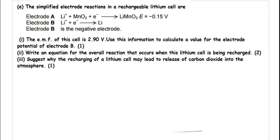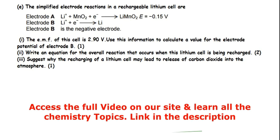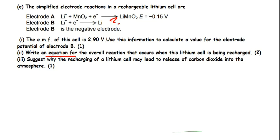Let's look at question 1E. We are told the simplified electrode reactions in a rechargeable lithium cell are given. We've got electrode A and electrode B. We are told B is the negative electrode. The EMF for this cell is 2.90 volts. Use this information to calculate a value for the electrode potential of electrode B, which we are not given.